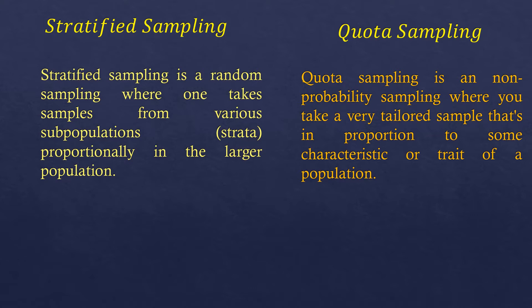What's similar between stratified and quota sampling is that both take samples proportionally from smaller groups of a population. What's clearly different is that stratified sampling is random sampling, while quota sampling is non-random or non-probability sampling.